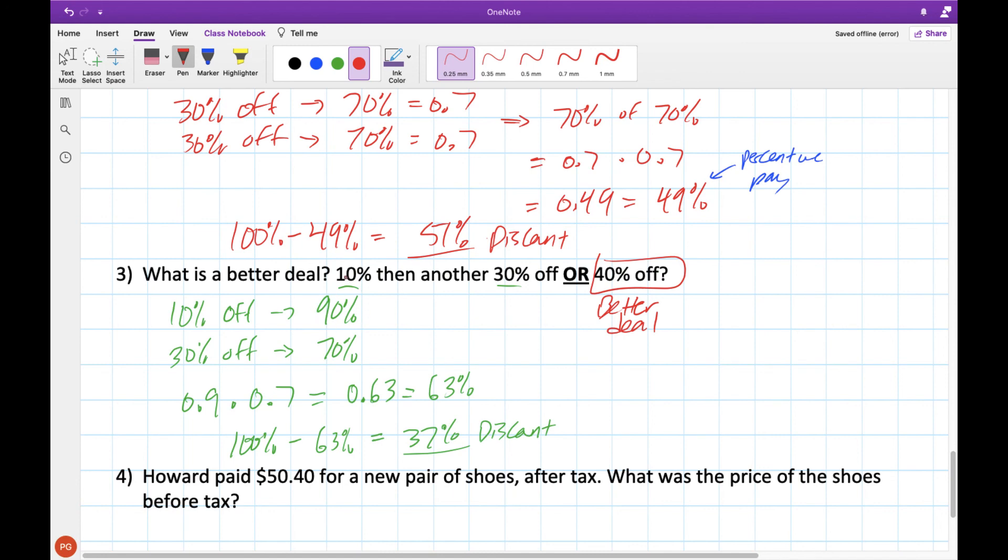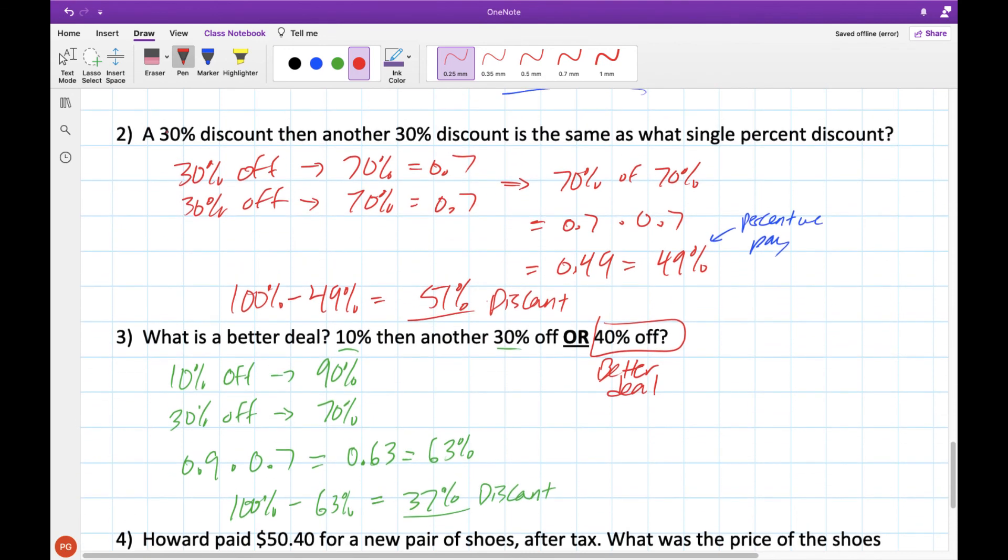This is why when we have two smaller discounts that add up to a bigger discount, these smaller discounts are always worse. And we saw that in our previous example, 30% than 30% is worse than just 60% off right from the get-go. 30% than 30% is only 51% discount when we combine them. Just something to keep in mind when you have these sorts of things.